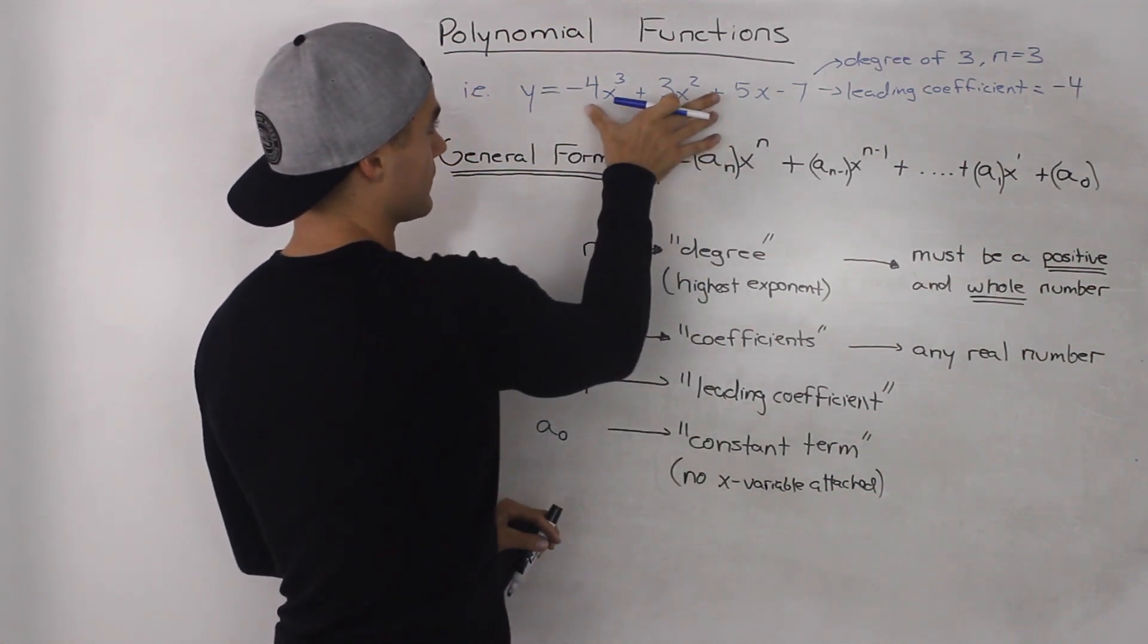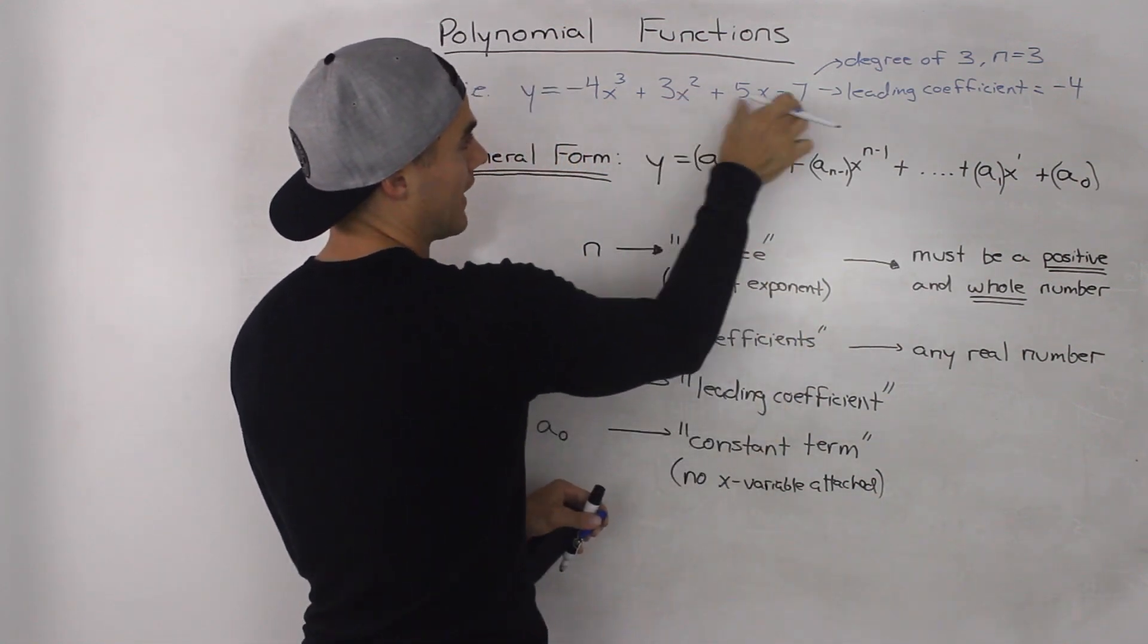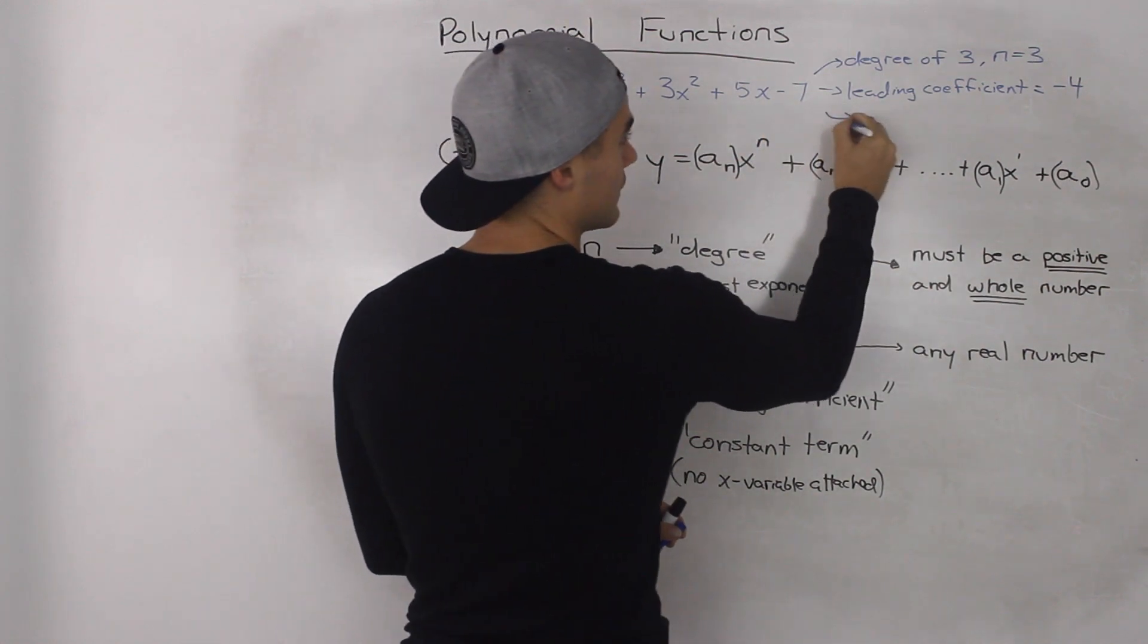So for example, here in this polynomial function, the constant term, the one that has the coefficient that has no x variable attached to it, is this negative 7. So the constant term is equal to negative 7.